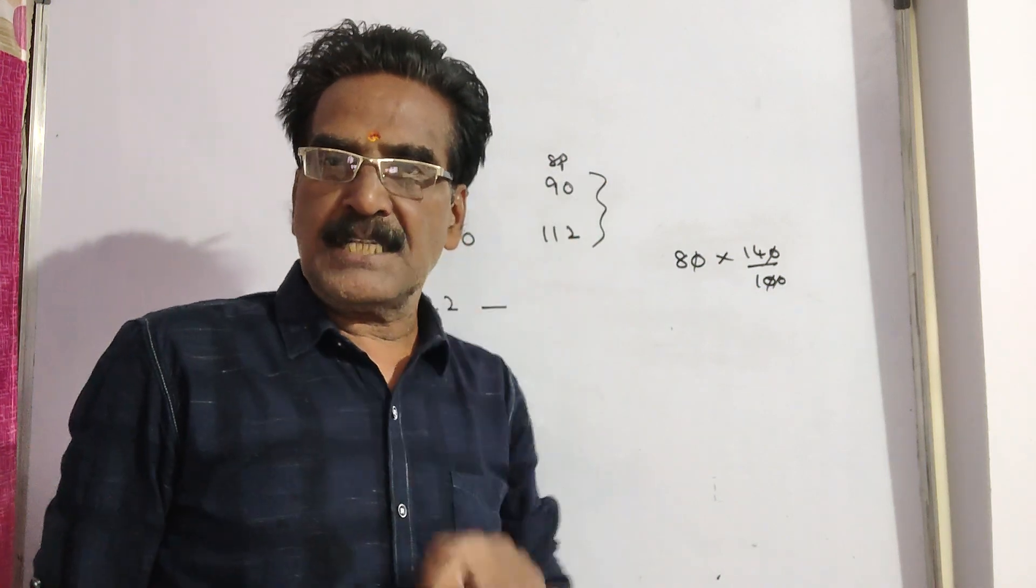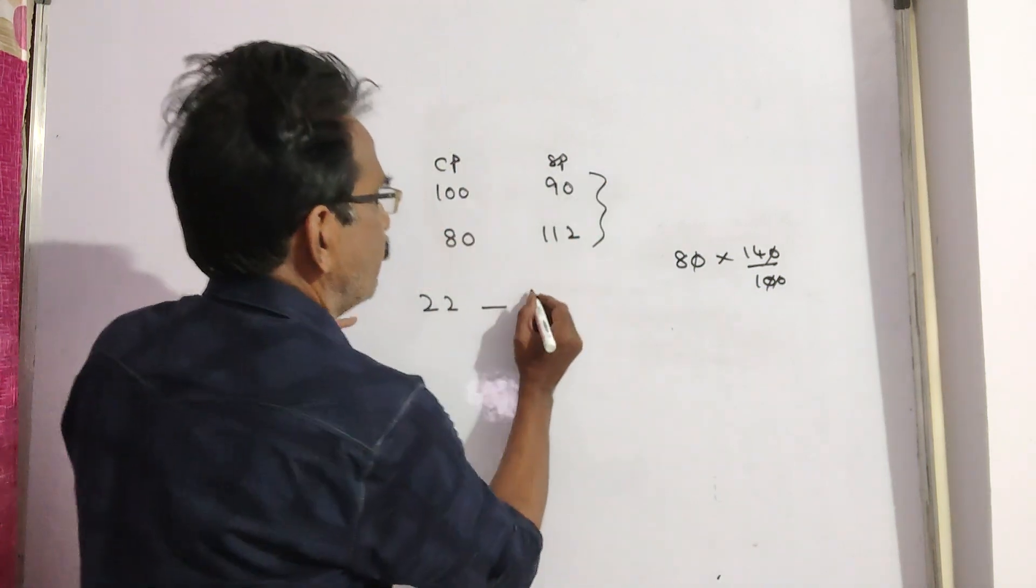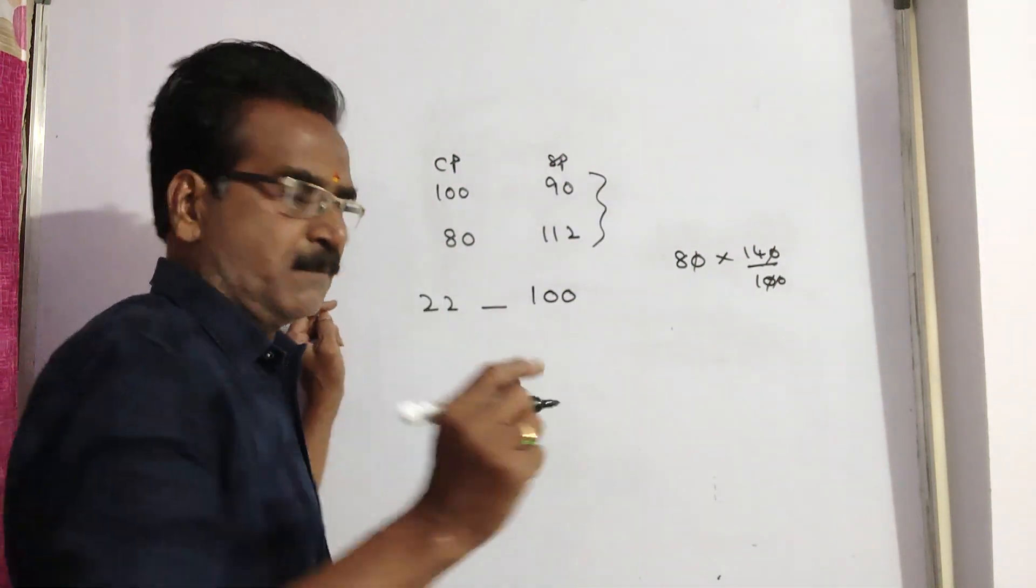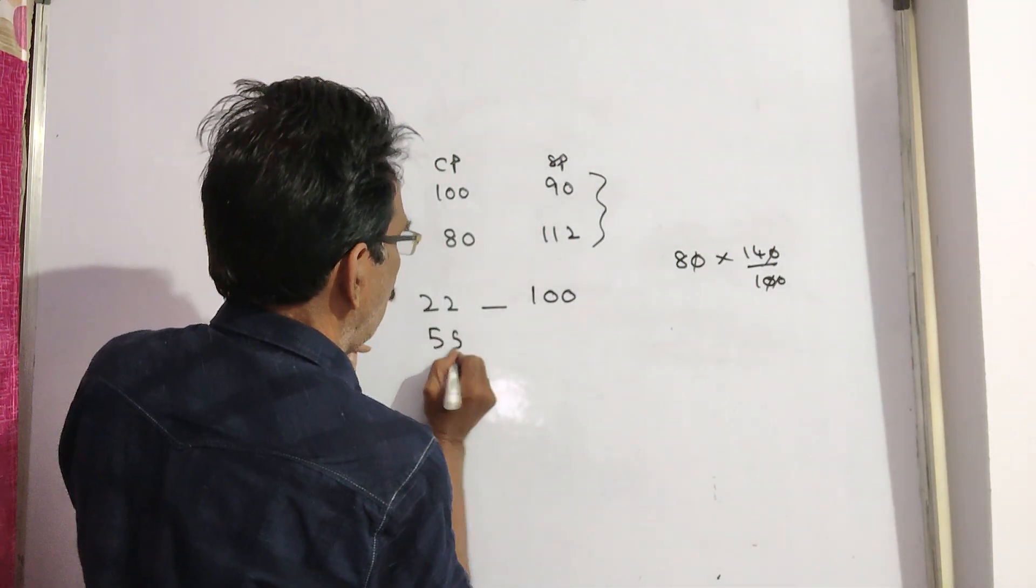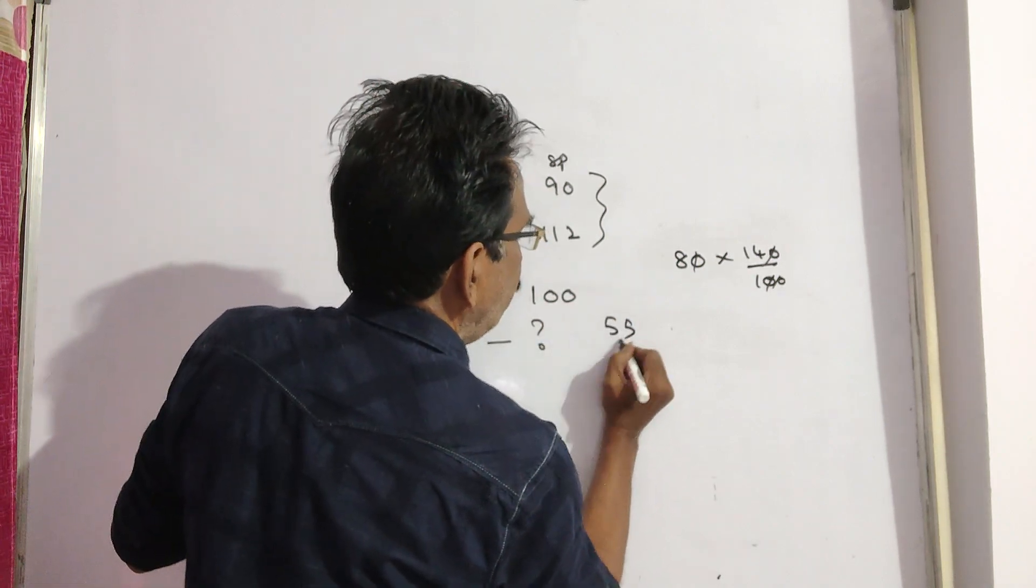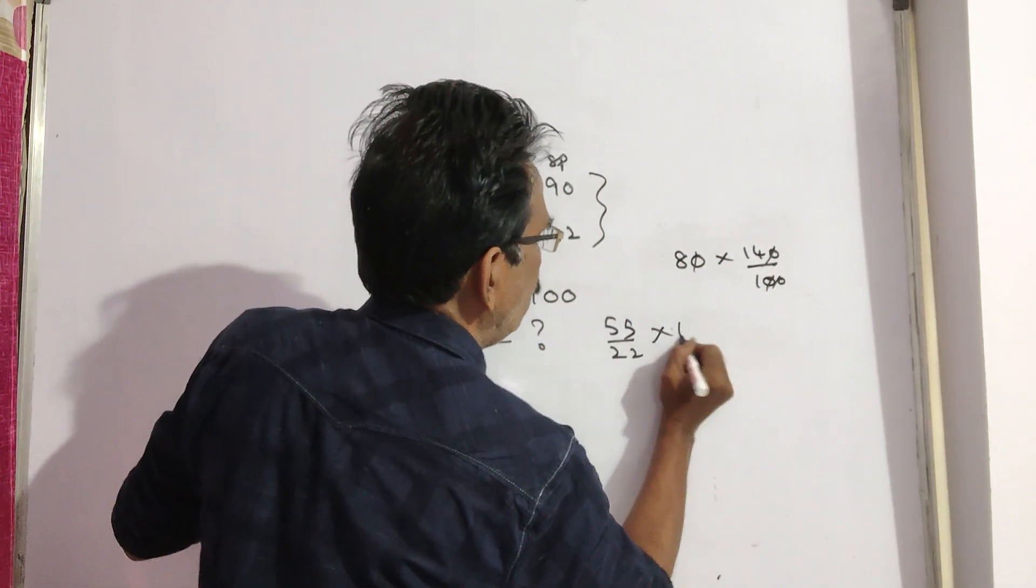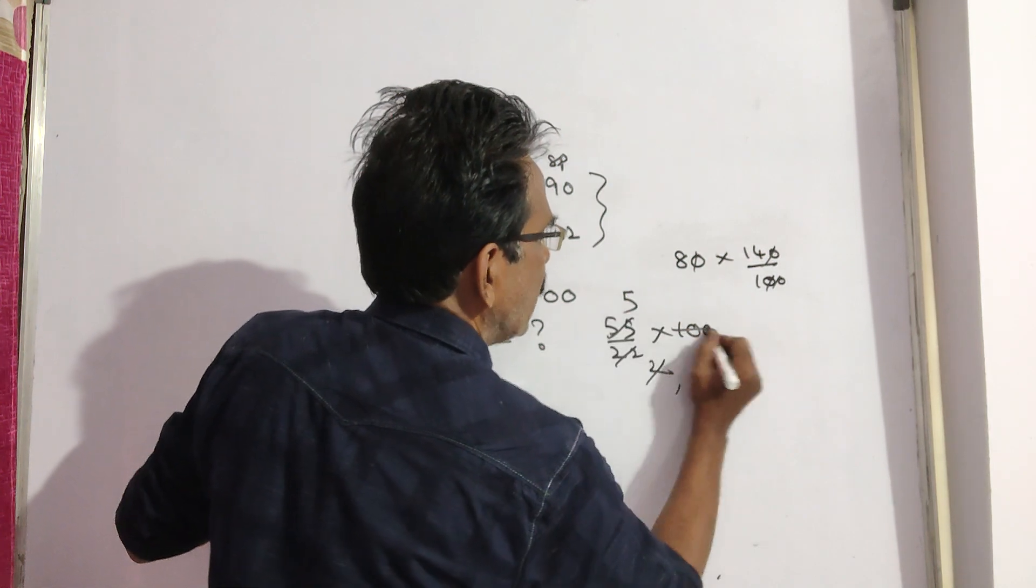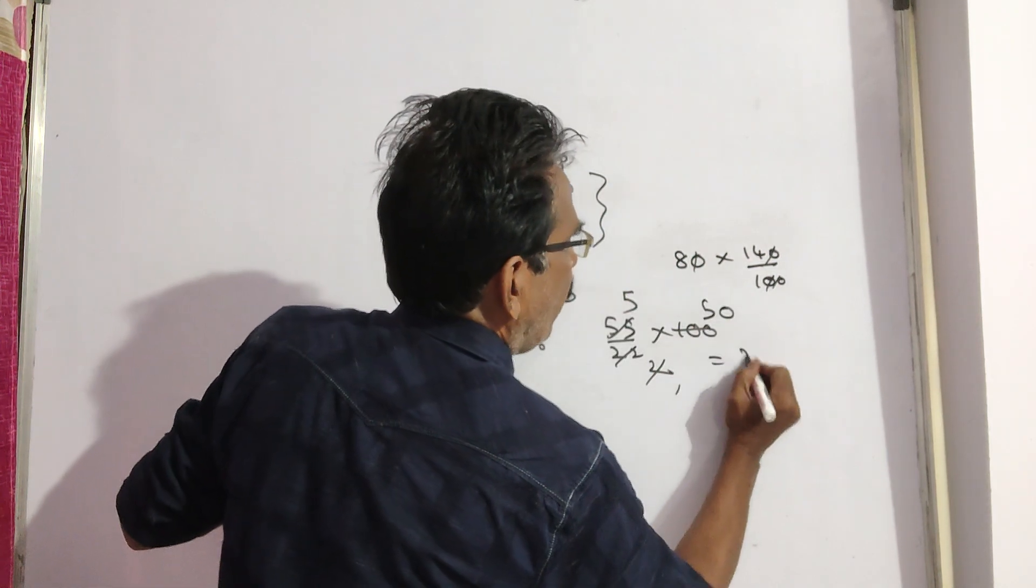If 22 rupees is more, then the cost price will be 100, but it is given that 55 rupees more. If 55 rupees more, then the cost price will be 55 by 22 into 100. 11 twos, 11 fives, 250.